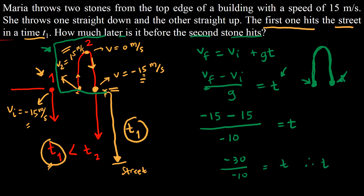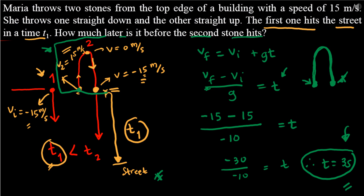Therefore, our time is equal to 3 seconds. This answers the question: how much later is it before the second stone hits? The second stone will reach the street 3 seconds after the first stone. And that concludes this tutorial. Always remember, physics is easy with Mr. Jesse.